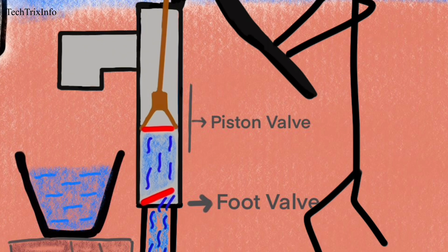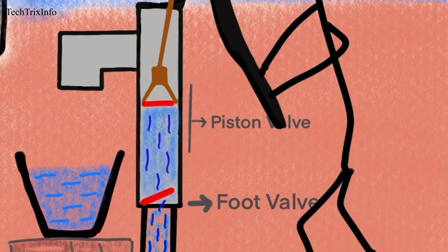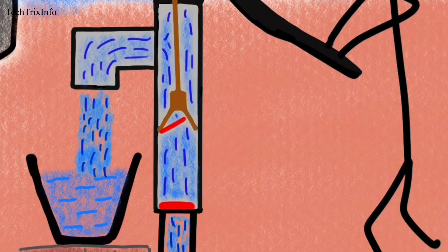The piston is in its upward stroke. As the piston moves upwards, the piston valve is closed and the foot valve is open, creating a suction. Now the piston is in its downward stroke. Here you can see the piston valve is open and the foot valve is closed.